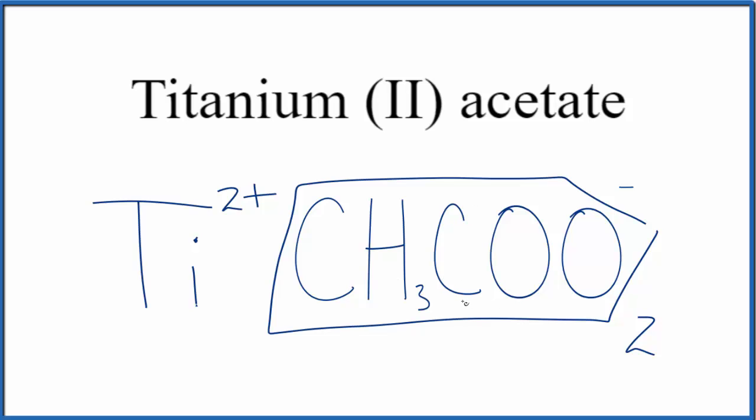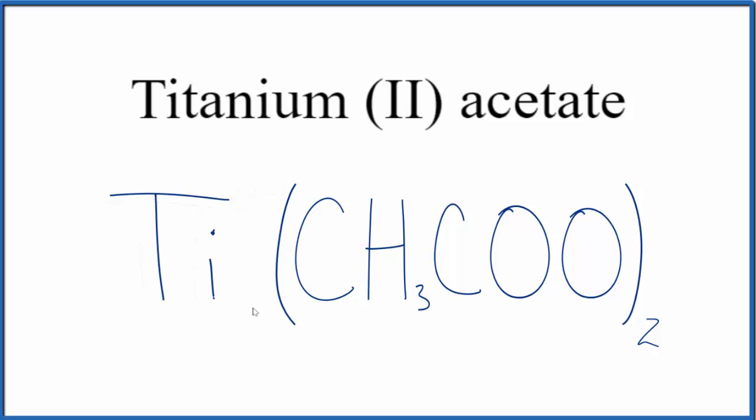We do need to add parentheses around the acetate ion here. Get rid of this negative charge. And this is the formula for titanium acetate, Ti(CH3COO)2.